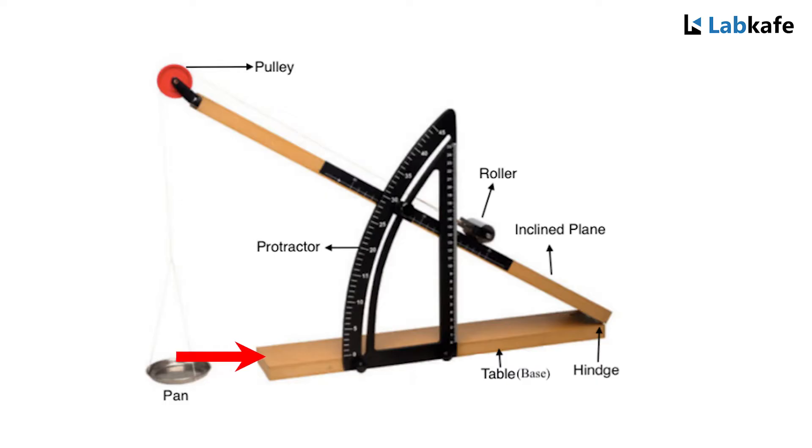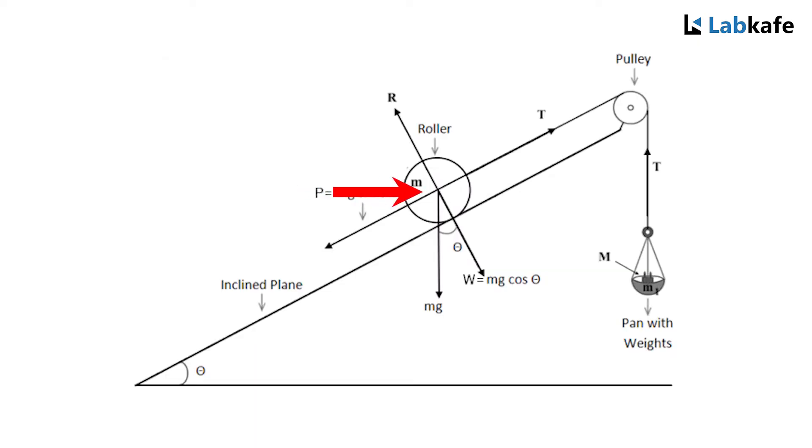An inclined plane consists of a horizontal wooden plane. Another wooden plane is hinged at the other end of the table so that it can incline at any angle and be fixed at that inclination as shown. The angle of inclination is measured by an angular scale or protractor attached to the table. A frictionless pulley is attached at the other end of the inclined plane.